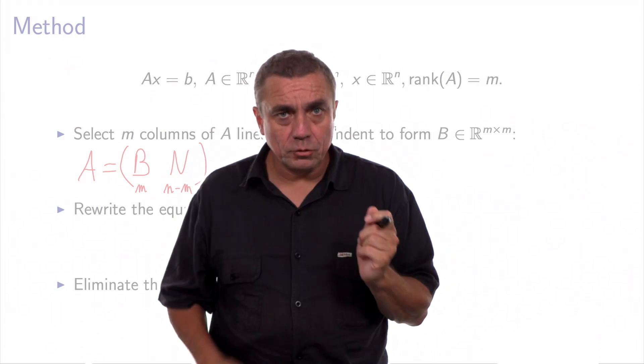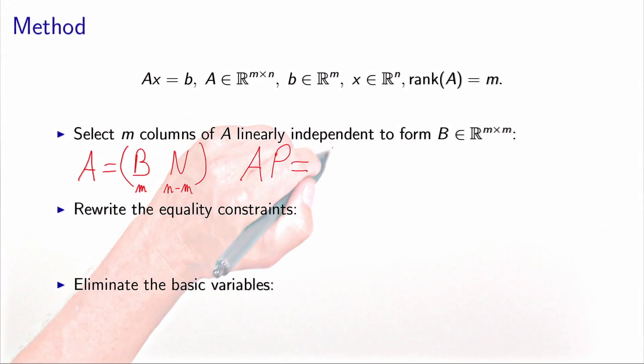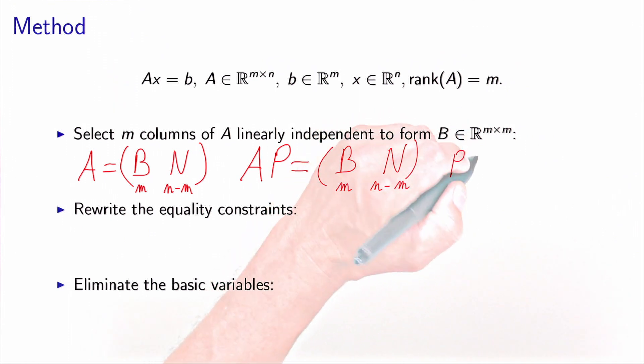And this permuted matrix is decomposed into a square matrix B, with m rows and m columns, and a matrix N, which has m rows and n minus m columns. So P is a permutation matrix, so it means that P times P transpose is the identity matrix.